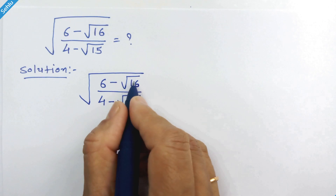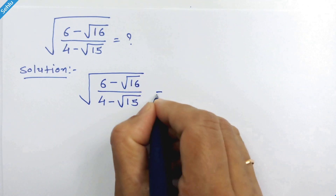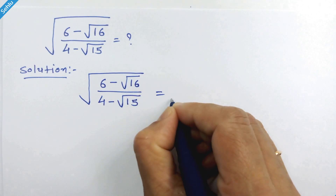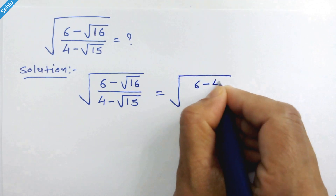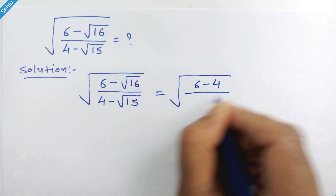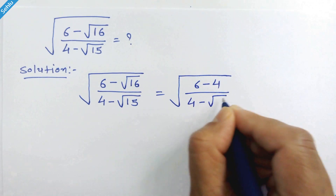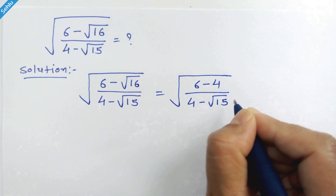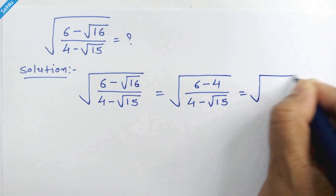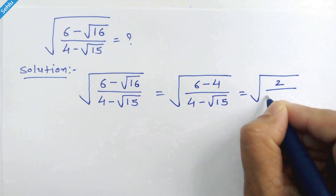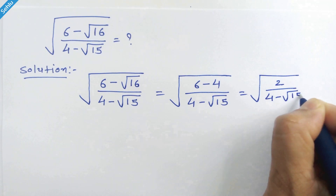First we will focus on the square root of 16, which is 4. So we can write it as square root of 6 minus 4, upon 4 minus square root of 15. This simplifies to square root of 2 upon 4 minus square root of 15.